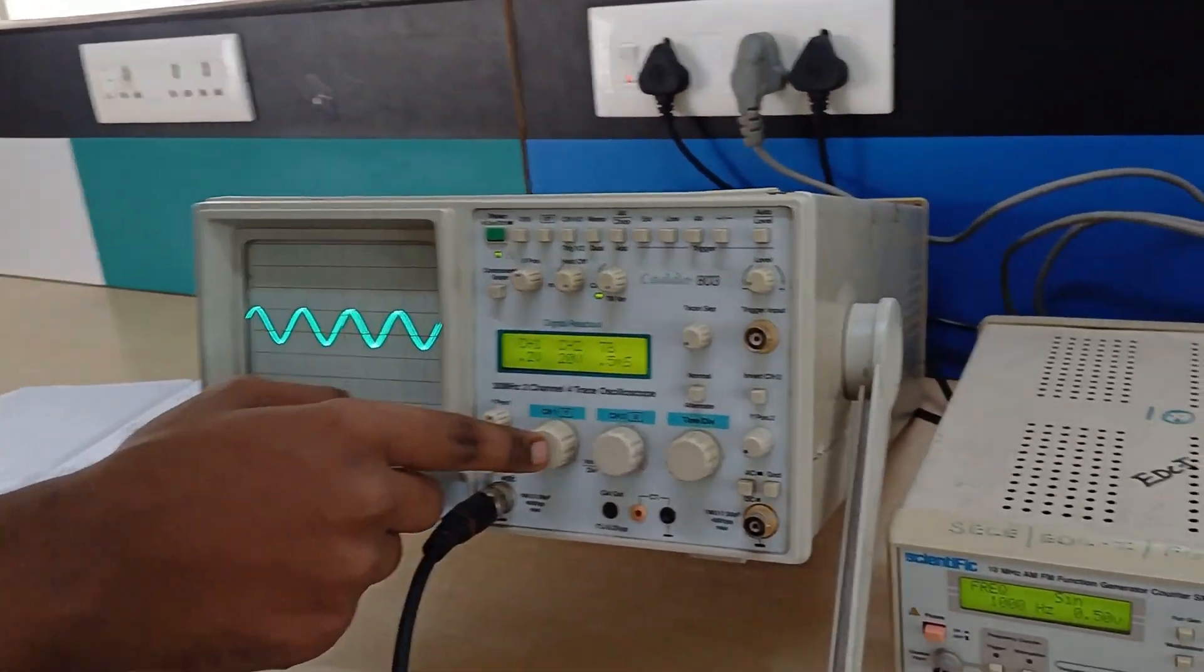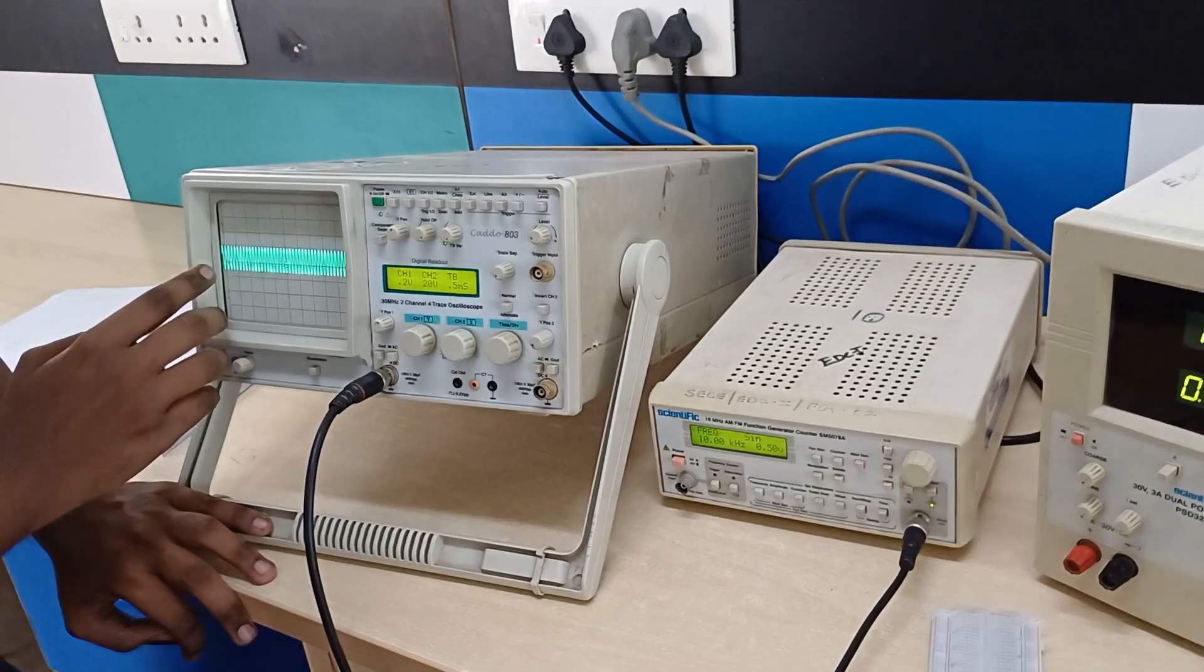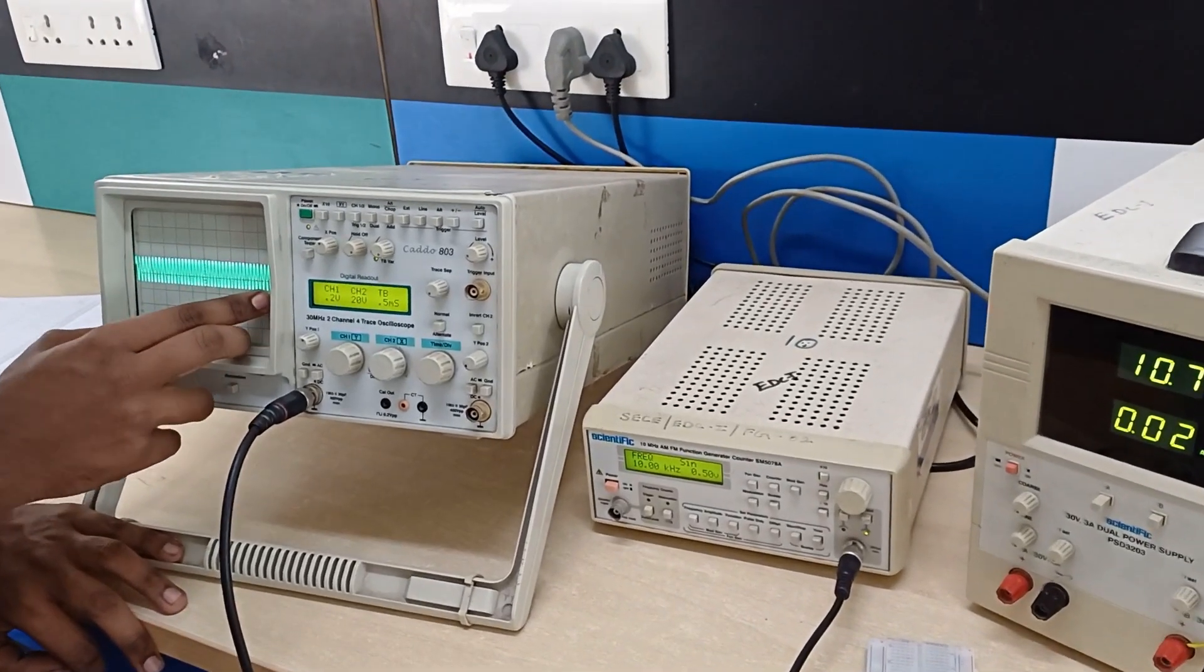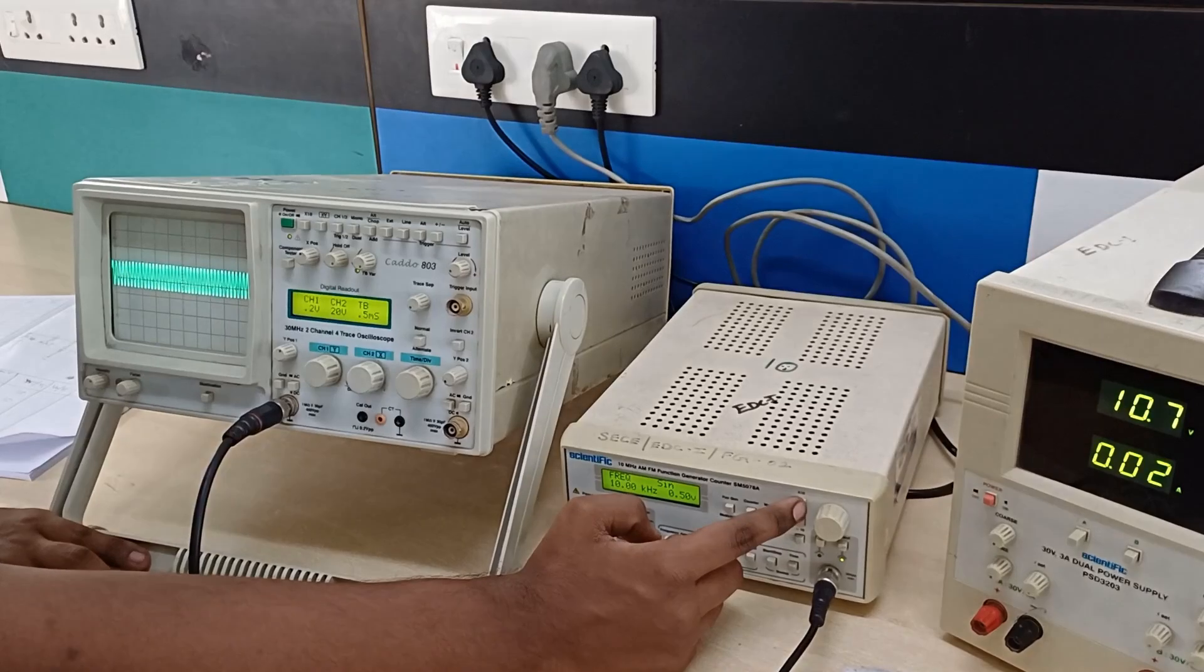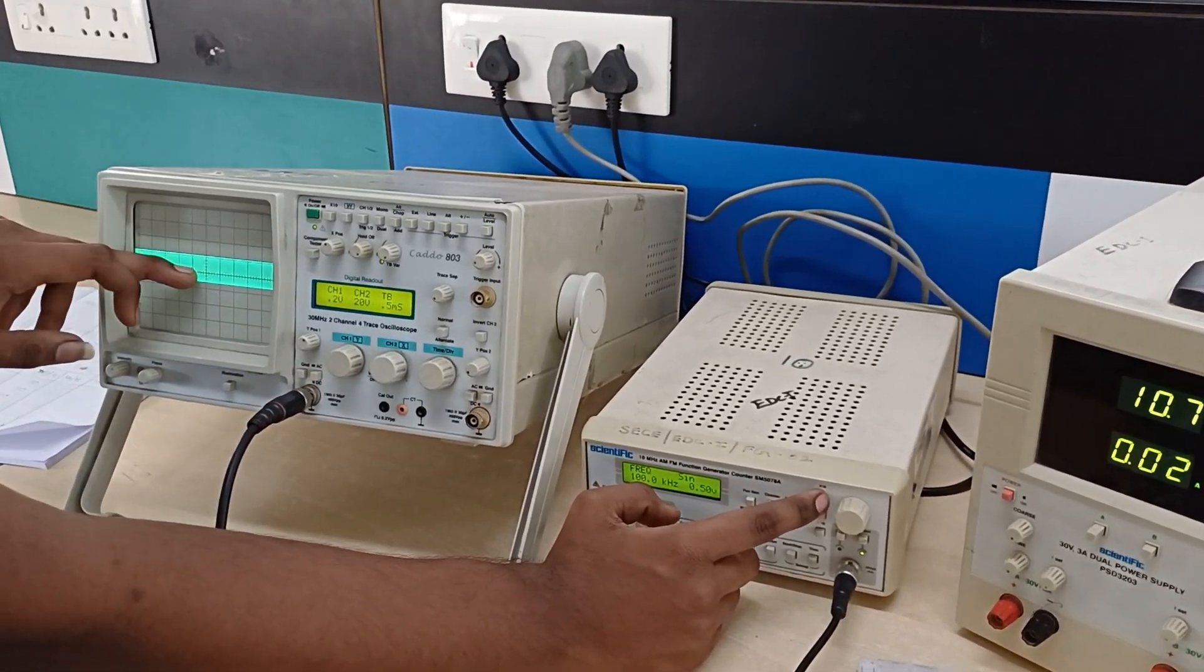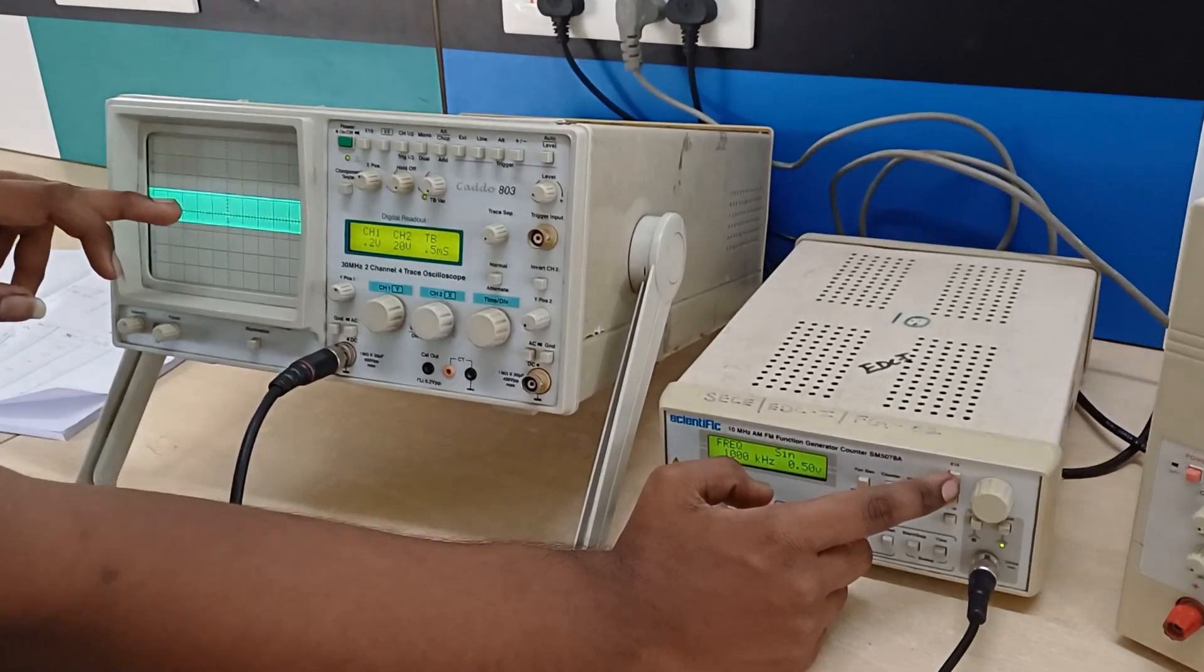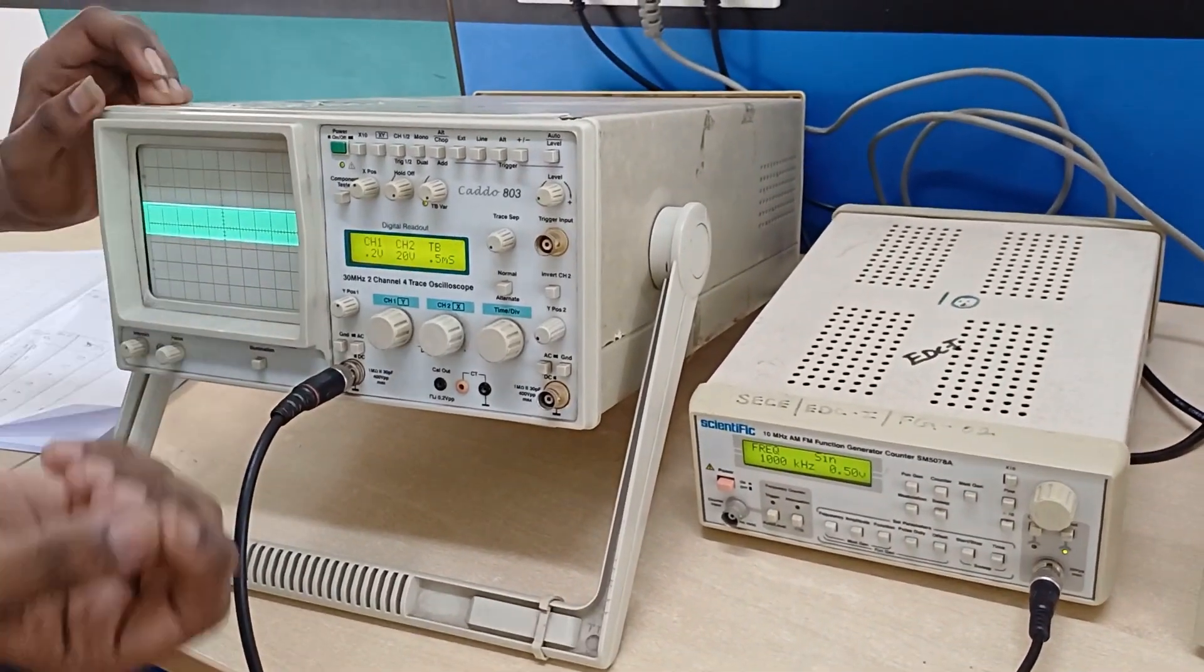Now we are going to increase the frequency. When we keep it at 100 Hz we get this waveform. Now next we are going for 100 kHz. At 100 kHz also we get the same amplitude. When we go to 1000 kHz the amplitude slightly got decreased, very minute decrease is there.